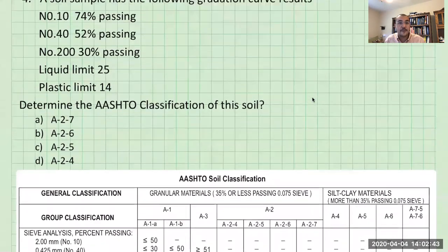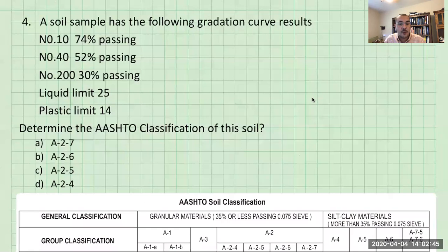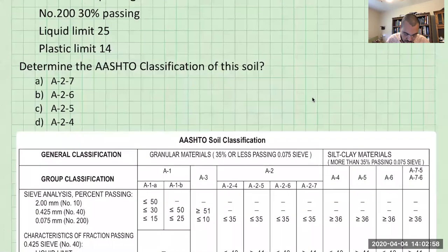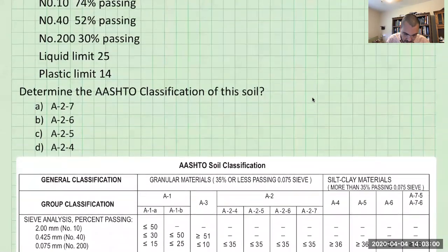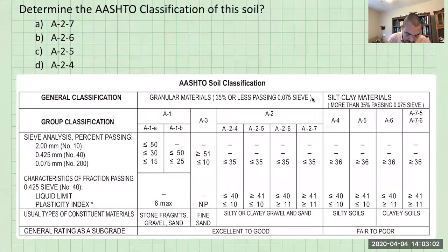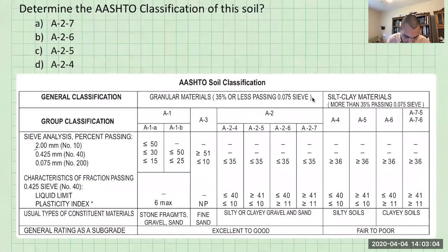Now the first thing that we are given is passing the number 10. So we have 74 percent passing the number 10. And we'll go here and we'll say 74 percent. What is the number 10? It's right here. So we start again from left to right. We go this way.